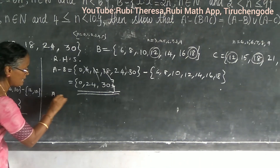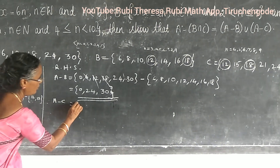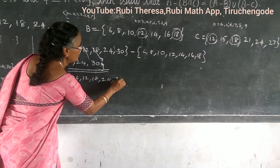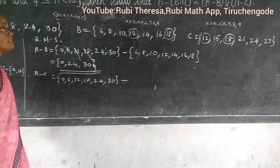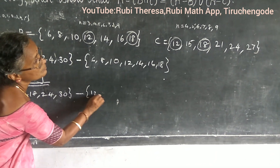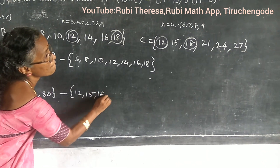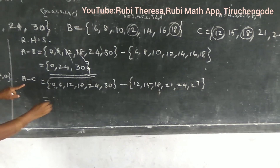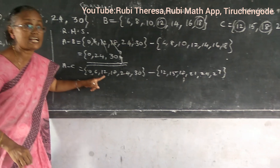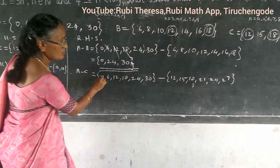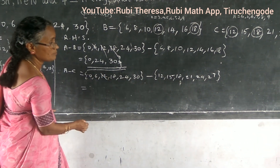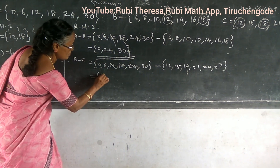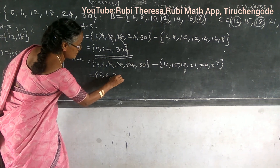Next, find A difference C. A equals {0, 6, 12, 18, 24, 30} and C equals {12, 15, 18, 21, 24, 27}. Elements 12, 18, and 24 are common, so removing them from A gives A difference C equals {0, 6, 30}.